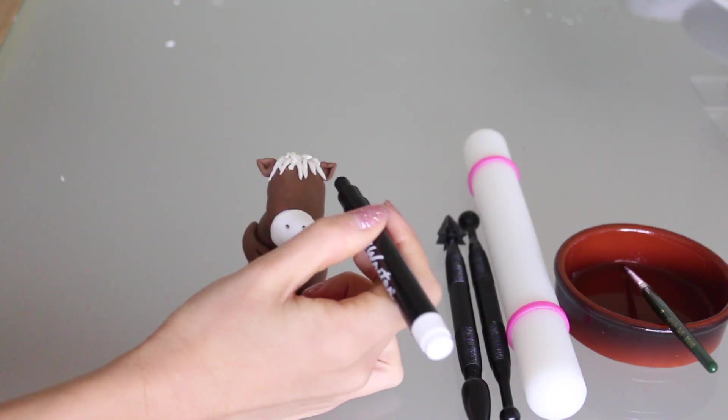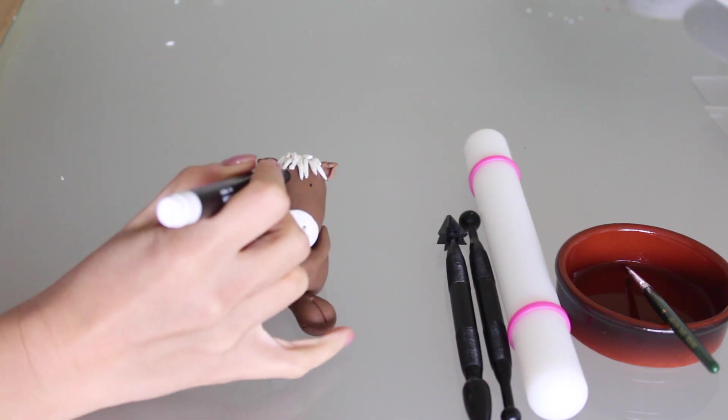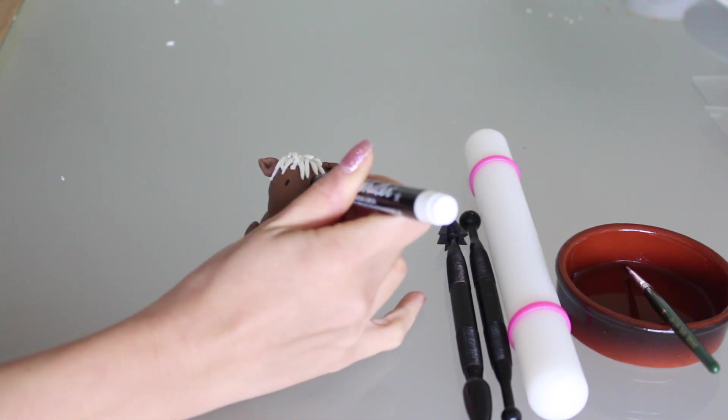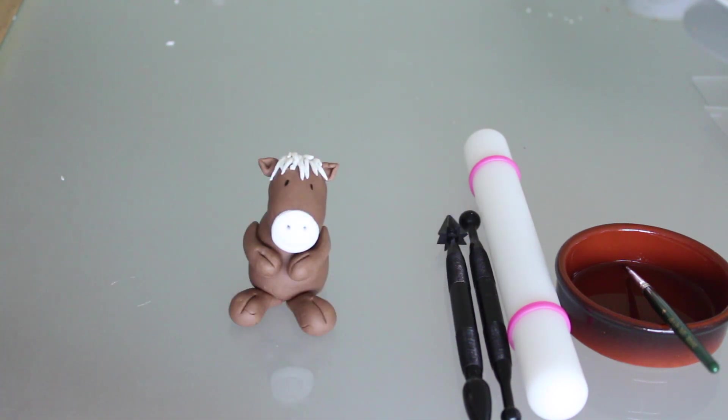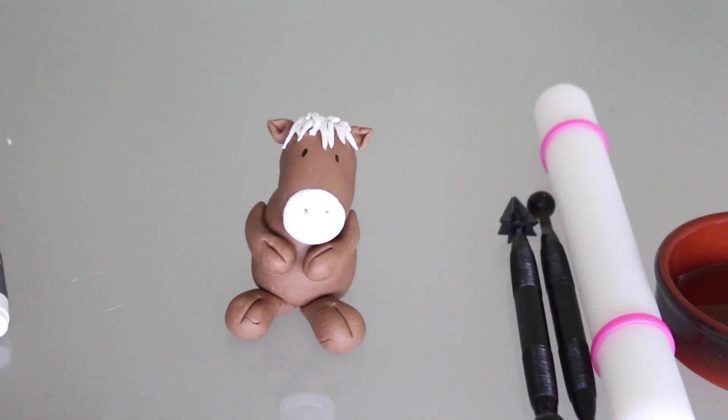And now for the last step. Give your horse some eyes with an edible marker. And that's it! Ta-da! Your fondant horse is done!